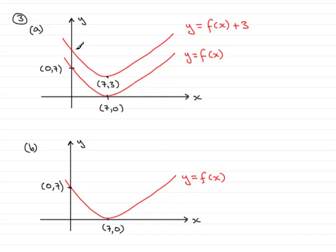This point here will be, instead of (0, 7), it's risen 3 units, so it will be (0, 10). So we have our new graph then of y equals f of x plus 3.